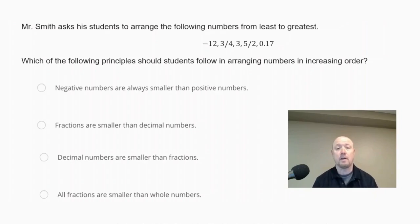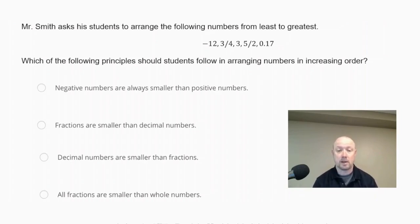The answer choices are: negative numbers are always smaller than positive numbers; fractions are smaller than decimal numbers; decimal numbers are smaller than fractions; and all fractions are smaller than whole numbers.